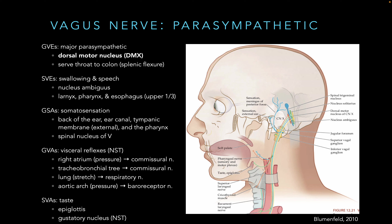The vagus nerve also has a big collection of fibers. The vagus nerve is the major parasympathetic nerve — the general visceral efferents provide parasympathetic input from throat to colon, everything in between. These fibers arise from the dorsal motor nucleus of the vagus, not the nucleus ambiguus. We do also have fibers from the nucleus ambiguus — those are the special visceral efferents, allowing us to speak and swallow. They innervate the larynx, pharynx, and the upper one-third of the esophagus.